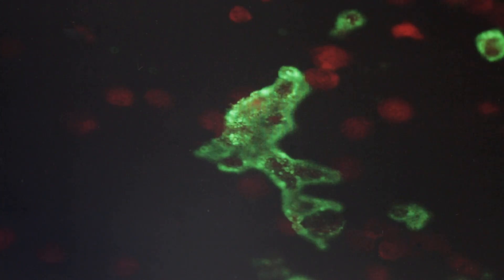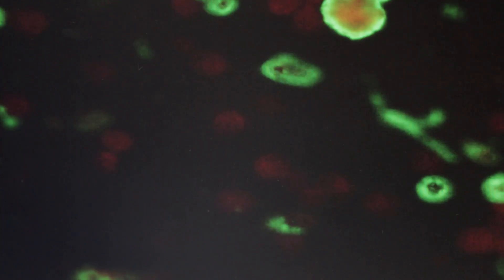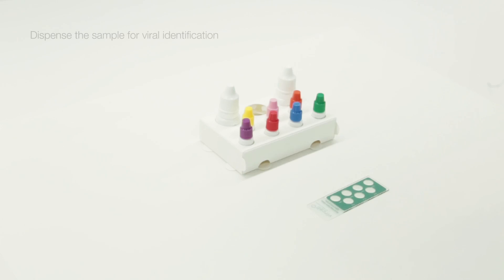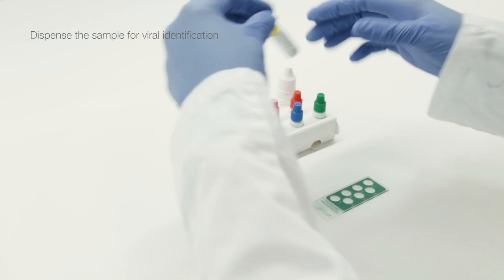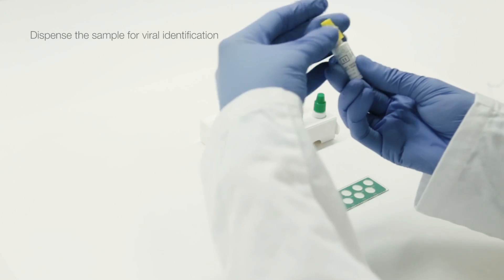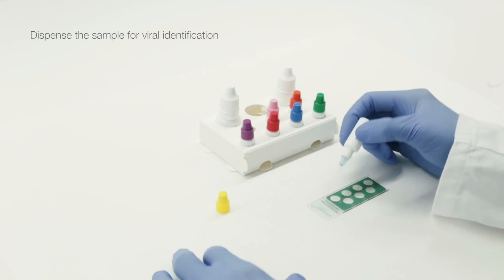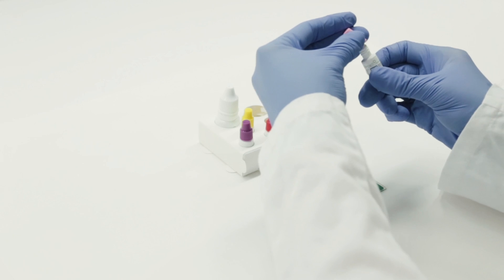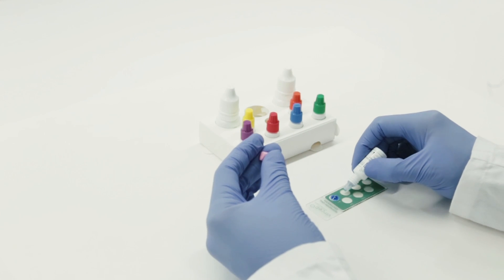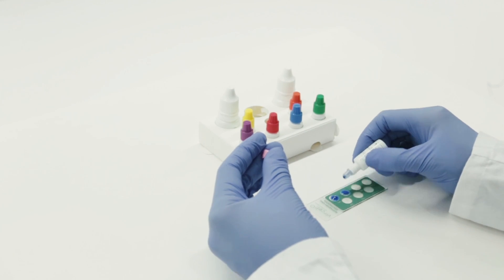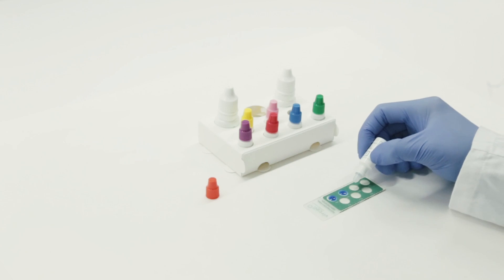Positive results should be further investigated. Dispense the sample in the virus identification slide and add one drop from each of the specific FITC-labeled monoclonal antibody bottles to each well. Make sure that the reagent covers the entire cell-coated area.